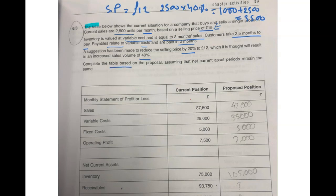Complete the table below based on the proposal, assuming net current assets. We will be doing that. No problem. Let's see whether she got this one correct or not. She said £42,000.